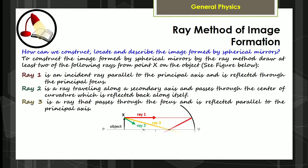Now let's have the ray method of image formation. To construct the image formed by spherical mirrors using the ray method, draw at least two of the following rays from point X on the object. Ray 1 is an incident ray parallel to the principal axis and is reflected through the principal focus. Ray 2 is a ray traveling along a secondary axis passing through the center of curvature, which is reflected back along itself. Ray 3 is a ray that passes through the focus and is reflected parallel to the principal axis.